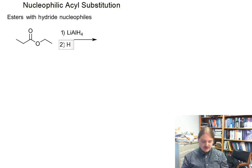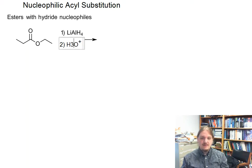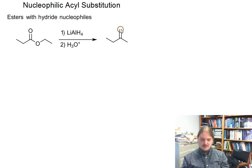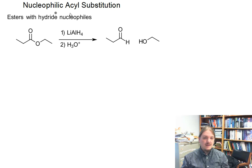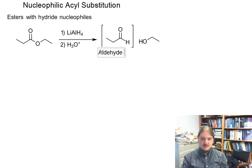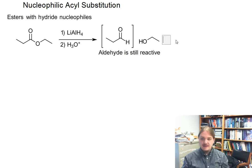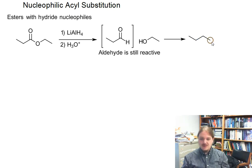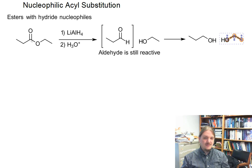So you know that lithium aluminum hydride goes through the aldehyde as an intermediate, and that the aldehyde is reactive with lithium aluminum hydride. And so we get further reduction of the aldehyde to the primary alcohol. This reaction generally creates two alcohols because one side of the ester is a leaving group as an alcohol.